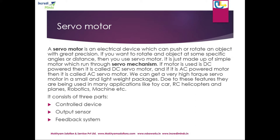Whatever angle we want, we can stop the shaft at that exact degree. In many robot designs we don't need a full rotation — just a small rotation like 120 or 130 degrees. For example, consider a car's windshield wiper: when there is water, the wiper moves back and forth to remove the water without needing a full rotation. So in this case, the servo motor operates within a particular angle, giving a back-and-forth motion within 120 degrees.